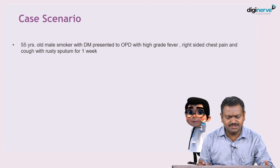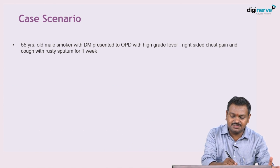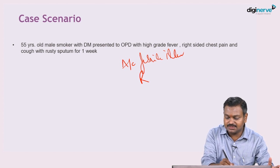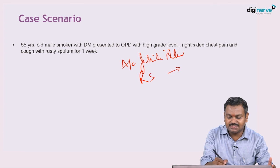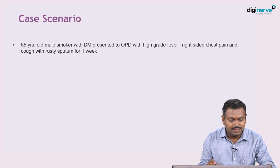Let's begin with the case scenario. We have a 55-year-old male smoker who is diabetic, presenting to the OPD with high-grade fever, right-sided chest pain, and cough with rusty sputum of one week duration. Based on the history, this is an acute febrile illness with involvement of the respiratory system. Cough with rusty sputum is pretty classical of pneumococcal pneumonia.